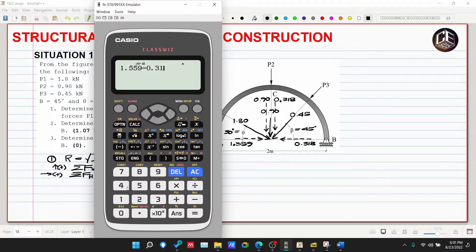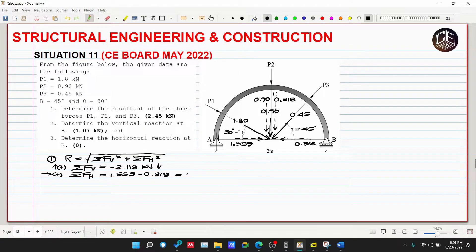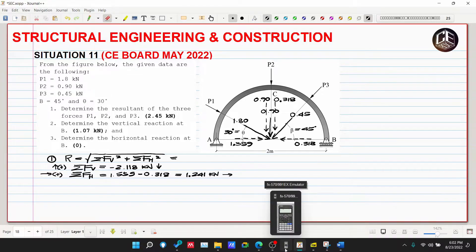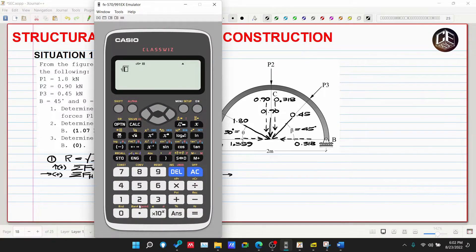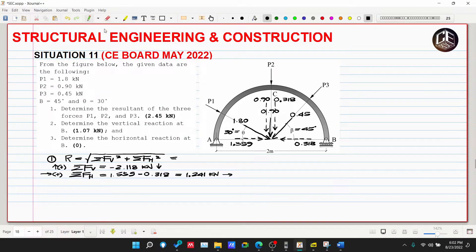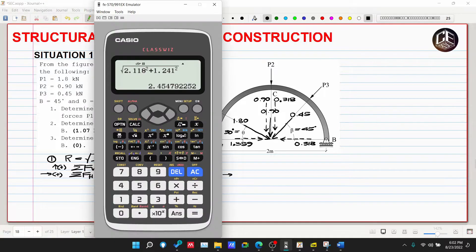Since positive to, ang nag-govern na effect in terms of horizontal is to the right. So masasabi natin yung ating resultant, this is square root of 2.118 squared plus 1.241 squared, so 2.455. Tama namin, nakuha natin so 2.455 kilonewton.